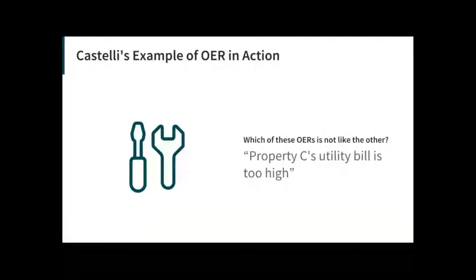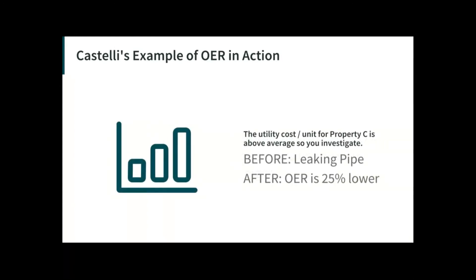On further examination, you see that the utility bills for property C are above average based on the number of units. So you investigate. Maybe there's a leaking pipe in property C causing an above-average water bill. You can have a plumber come in and fix that, and there's a crisis averted.